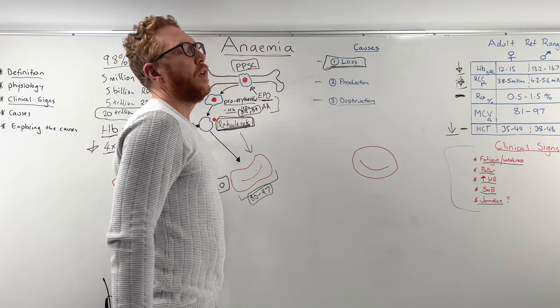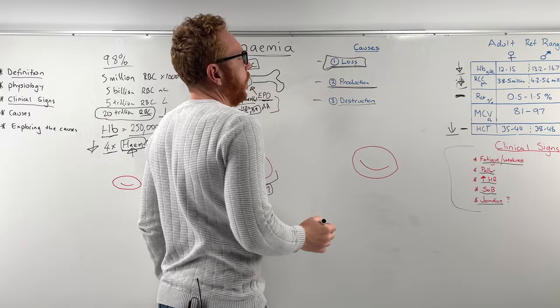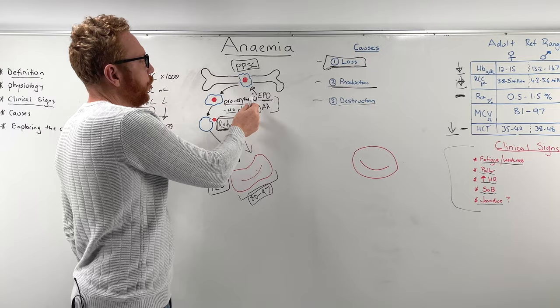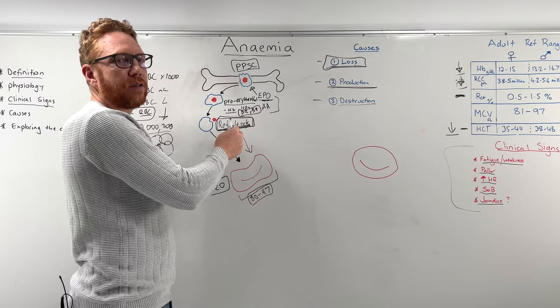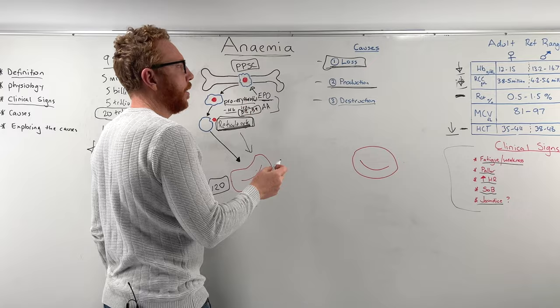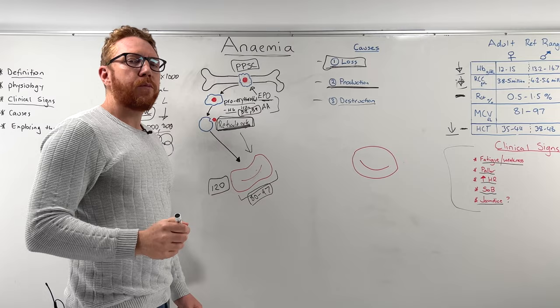Blood loss is the first category cause of anemia. The next is a production issue. If we have a problem producing the red blood cell or producing the hemoglobin — like running out of the required products — we will develop a reduction in hemoglobin and therefore anemia.